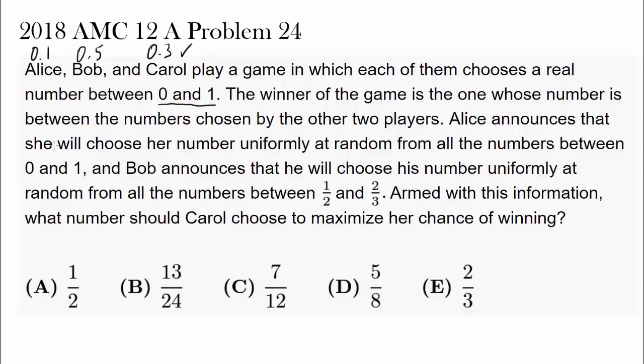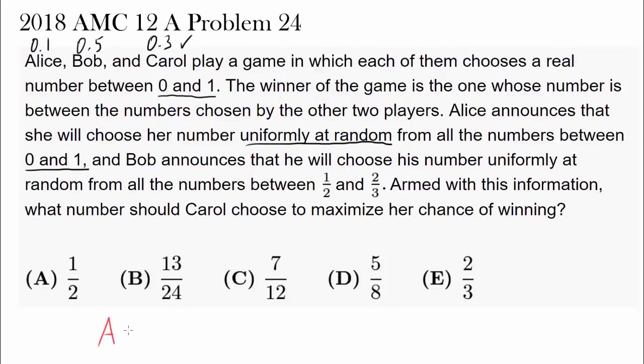Okay, so we know Alice announces that she will choose her number uniformly at random from all the numbers between 0 and 1. So every single equal sized interval between 0 and 1 has the same chance of containing the number that Alice picks. And Bob announces that he will choose his number uniformly at random between 1/2 and 2/3. Okay, let's go on.